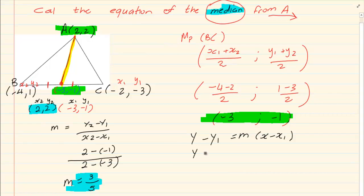So we are going to have y minus 2 is equal to, my M is 3 over 5, times x minus 2. Now get rid of your brackets.